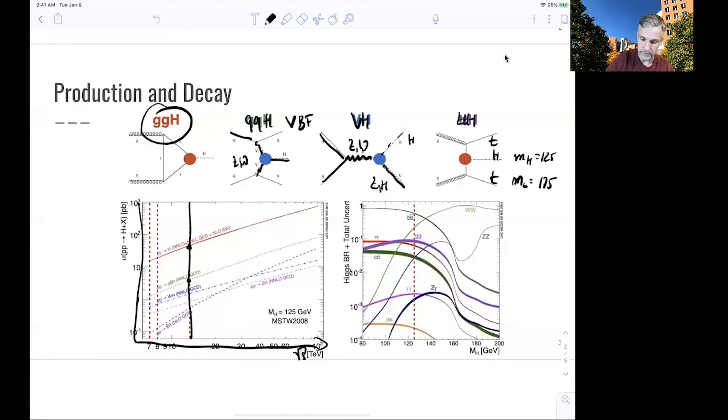An order of magnitude less is vector boson fusion. Then we have associated production, and finally Higgs boson production in association with top quarks.